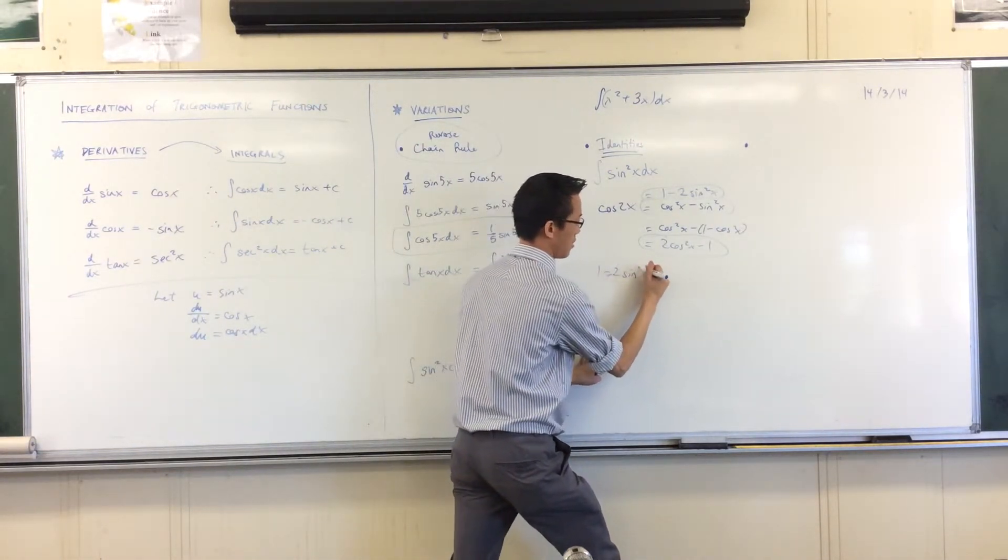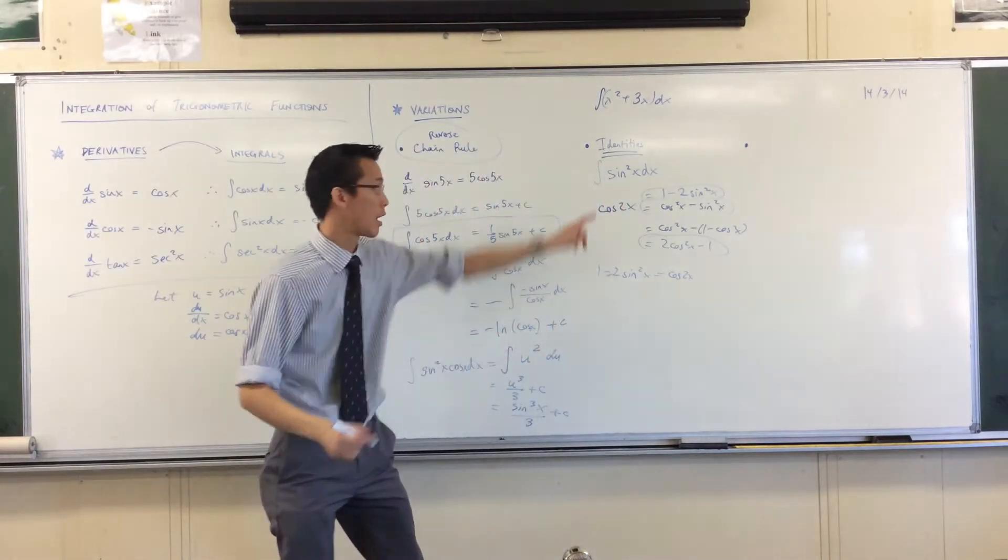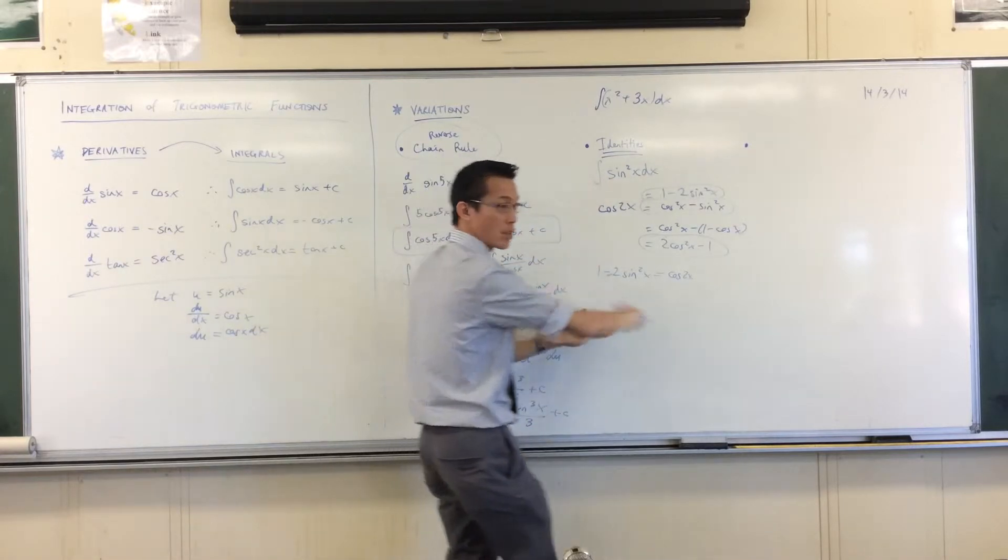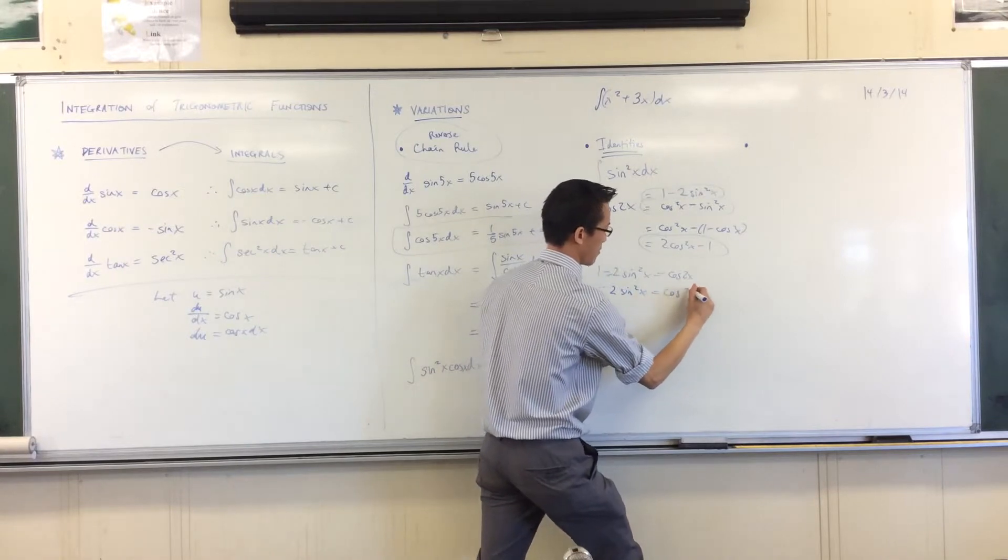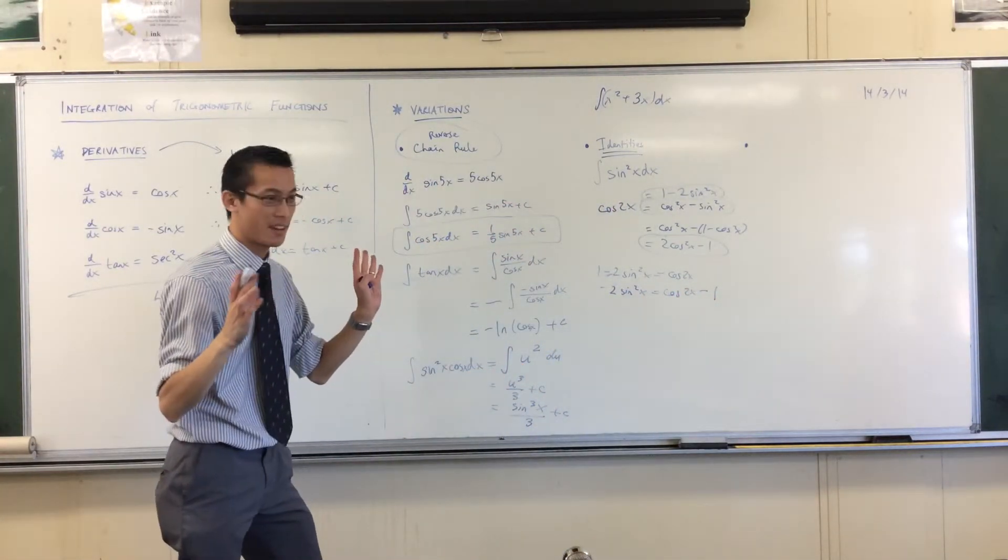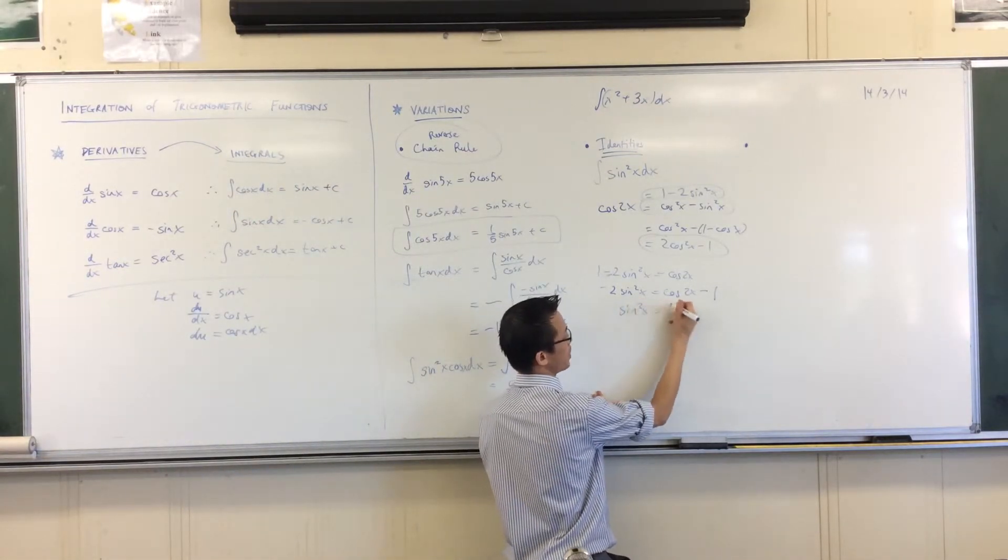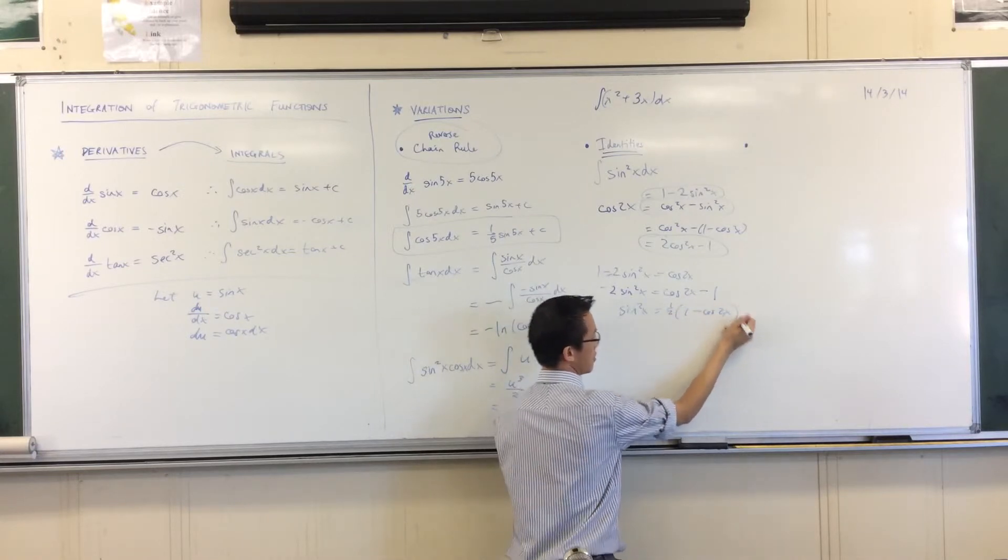Right, 1 minus 2 sine squared is cos 2x. So how do I make it the subject? I'm after this. Take the 1 over and then I'm struggling, and then divide by negative 2, which will do two things. Number one, it'll stick a half here and number two it'll turn this around. Is that okay?